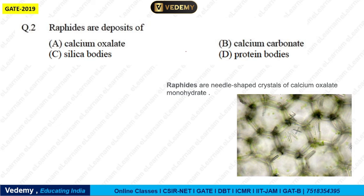The next question: raphides are deposits of which substance? Options are calcium oxalate, calcium carbonate, silica bodies, and protein bodies. Raphides are needle-shaped crystals of calcium oxalate monohydrate. So raphides represent calcium oxalate deposition. The correct answer is option 1 — calcium oxalate.